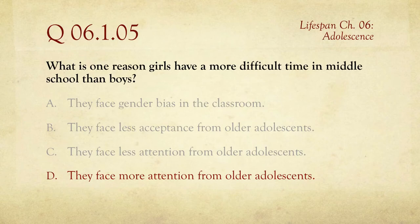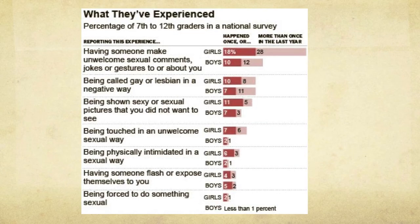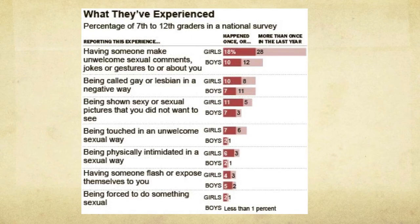Specifically, girls are getting looked at in ways they do not like by older boys in school, and younger boys don't face the same problem from older girls. It's gendered and one-directional. Here's an interesting chart from the New York Times, going from 7th to 12th grade. The percentage of girls who report having someone make unwelcome sexual comments, jokes, or gestures is twice as high as for boys. Being touched in an unwelcome sexual way is also much higher for girls — that's the kind of attention that makes things uncomfortable, especially going through puberty in middle school or junior high.